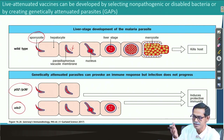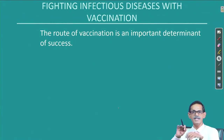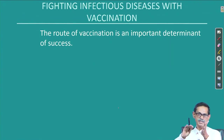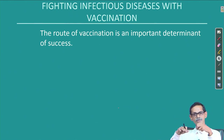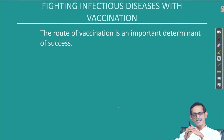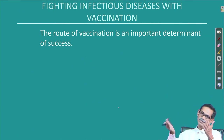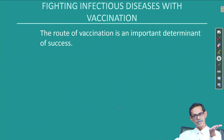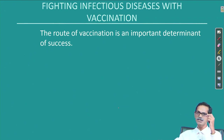The route of vaccination is an important determinant of success — as already discussed, if we can follow the original route of infection that is best. Otherwise, something is always better than nothing, so we use an alternative route, but the best is the natural path by which the pathogen infects.